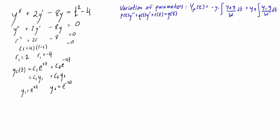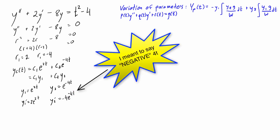We're getting pretty close to being able to use the variation of parameters equation. The only thing left is to find W, the Wronskian of y1 and y2. In order to get that, we also need the derivative of y1, which is 2e^(2t), and the derivative of y2, which is -4e^(-4t).